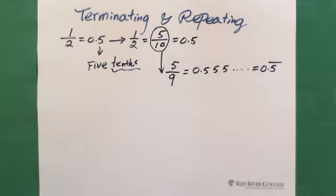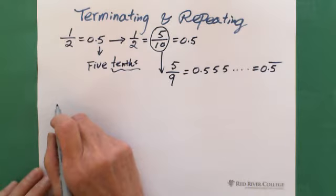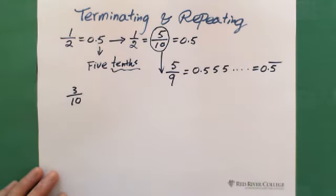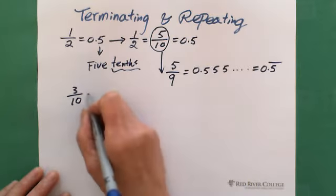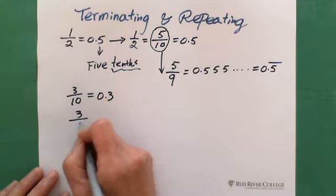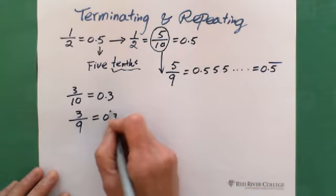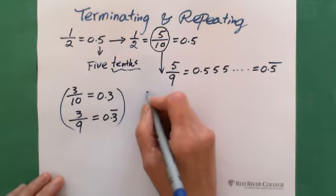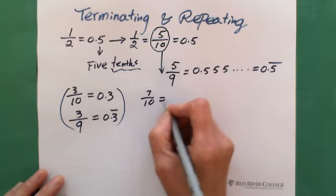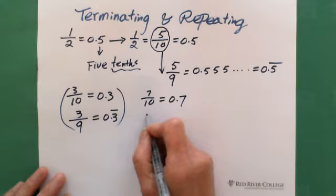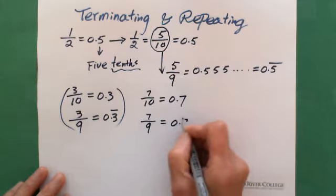It's the same with other numbers. If you have 3 over 10, you get 0.3 terminating. If you have 3 over 9, you get 0.3 repeating. Similarly, 7 over 10 equals 0.7 — that's 7 tenths, terminating. But 7 over 9 gives you 0.7 repeating.